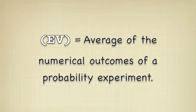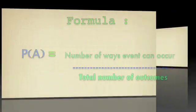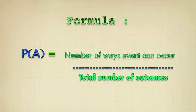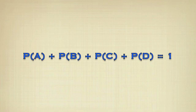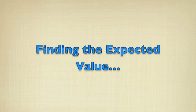Now, to find the expected value of an event, you multiply each possible outcome of the event by the likelihood of that outcome. So the formula for that would be number of ways an event can occur divided by total number of outcomes. So P of A plus P of B plus P of C plus P of D would be equal to 1, which is 100%.